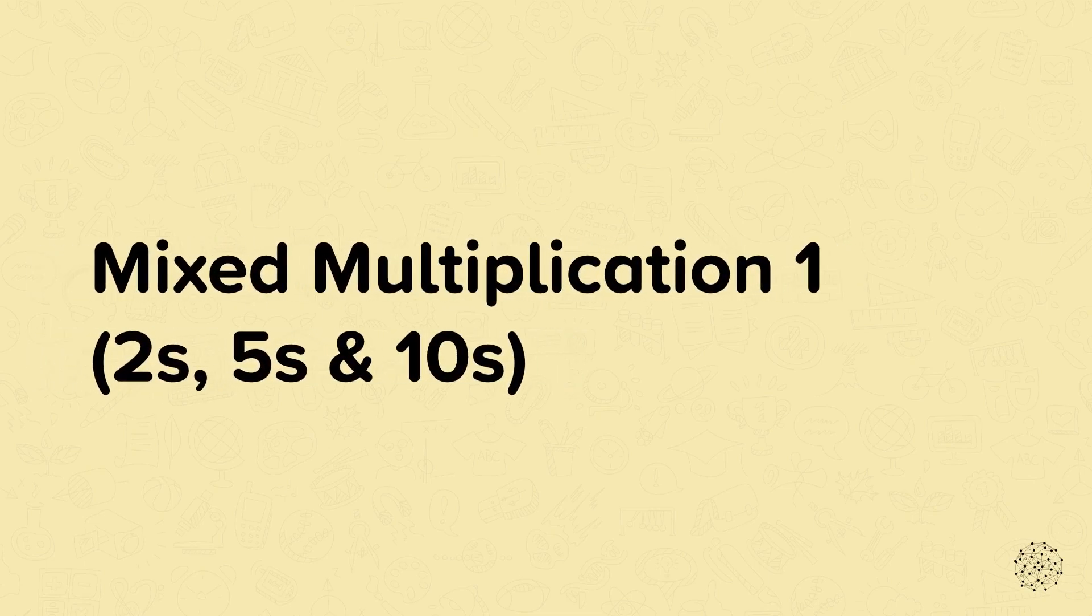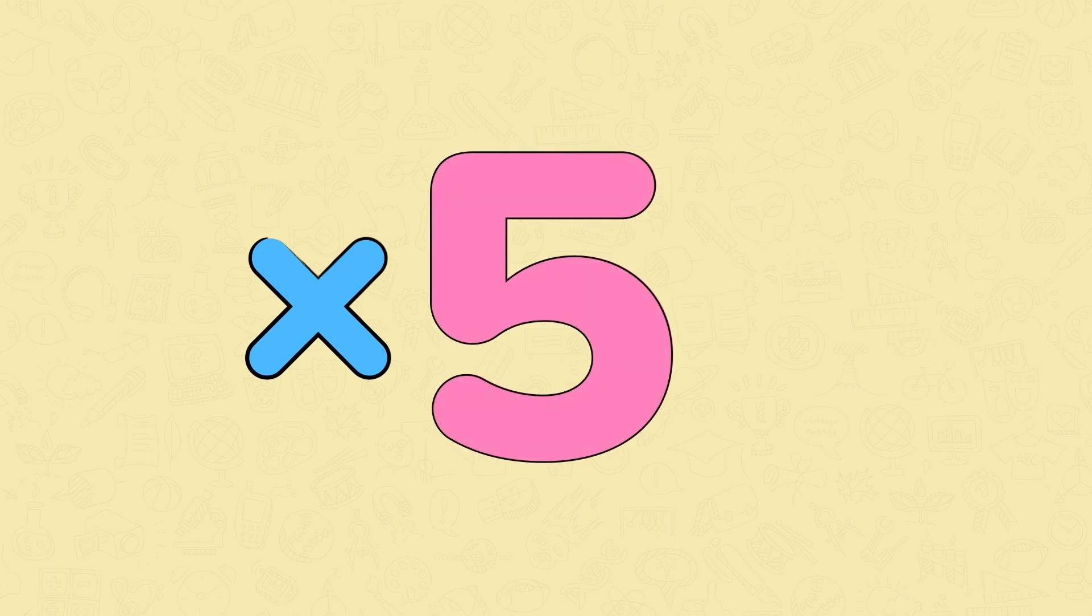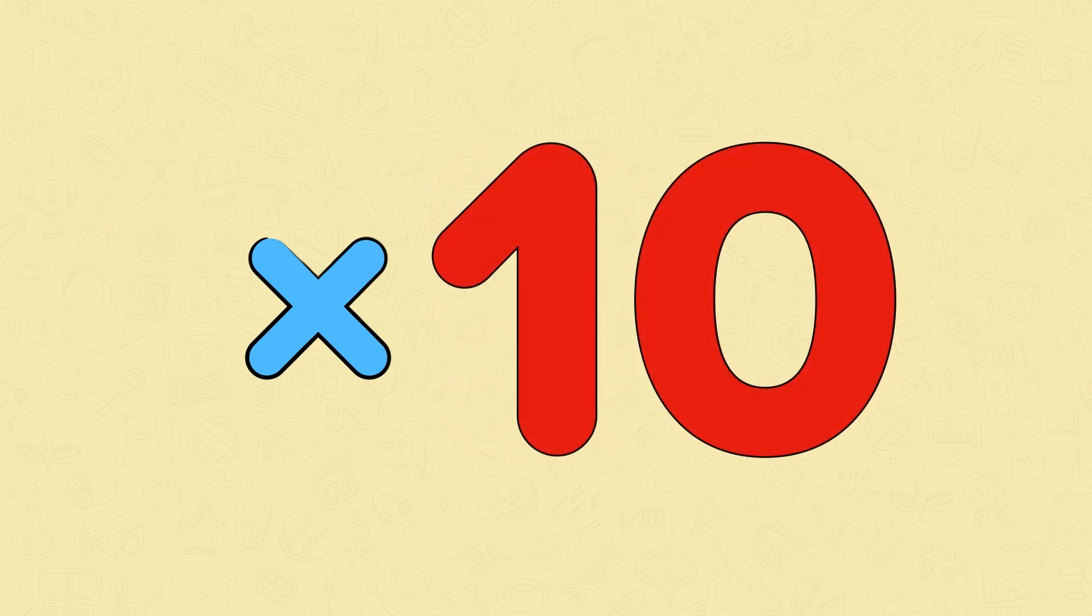Mixed Multiplication 1: 2s, 5s and 10s. In this nugget we're going to be multiplying by 2, 5 and 10.